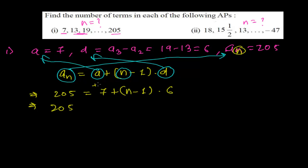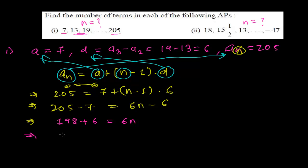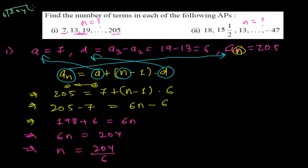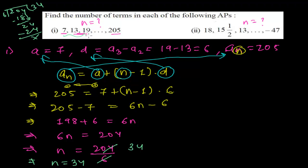Substituting: 205 = 7 + (n - 1) × 6. Moving 7 to the left gives 205 - 7 = 198, and expanding gives 6n - 6 = 198. Adding 6 to both sides: 6n = 198 + 6 = 204. Dividing by 6: n = 204 ÷ 6 = 34. So there are 34 terms in this arithmetic progression, meaning 205 is the 34th term.